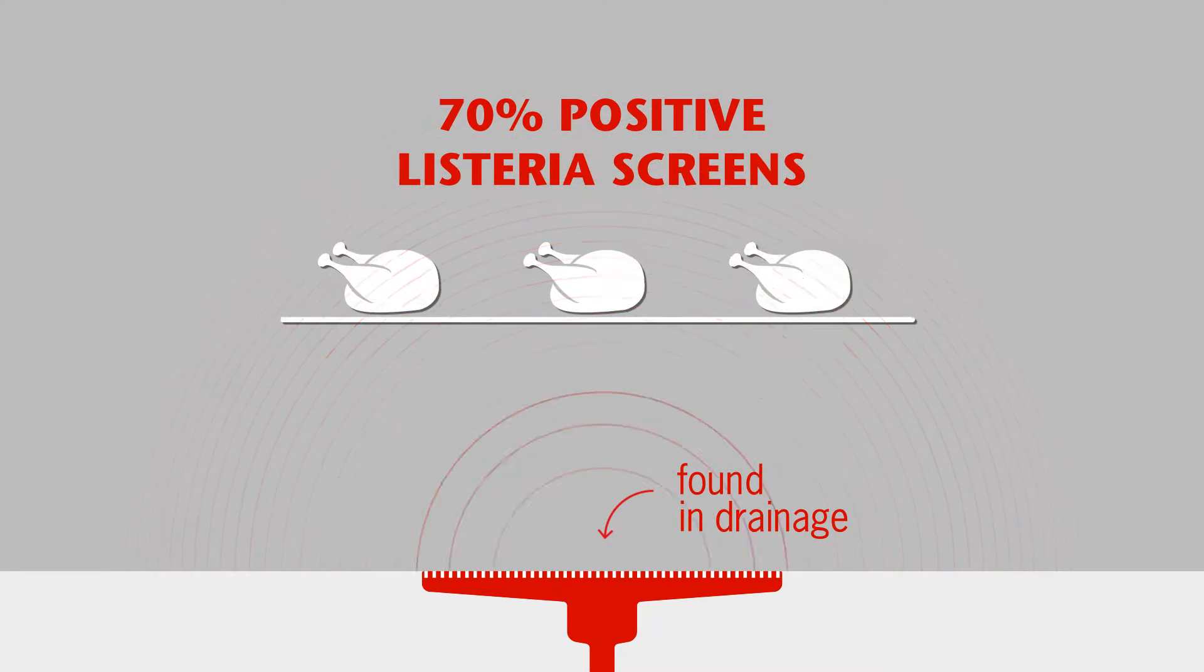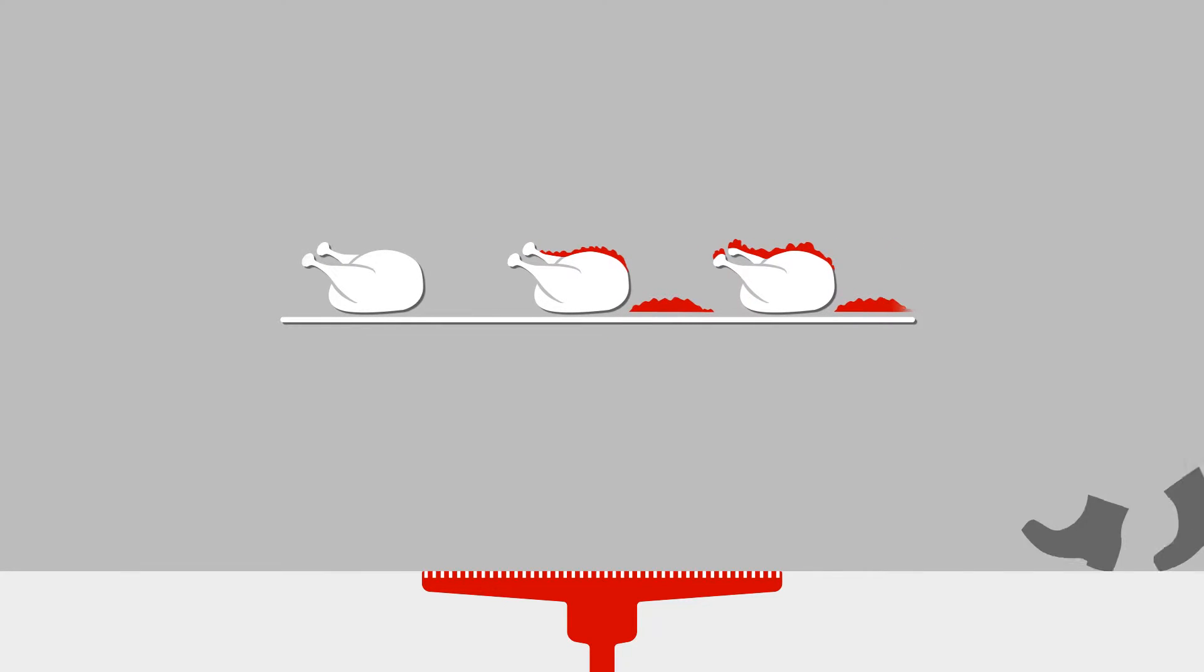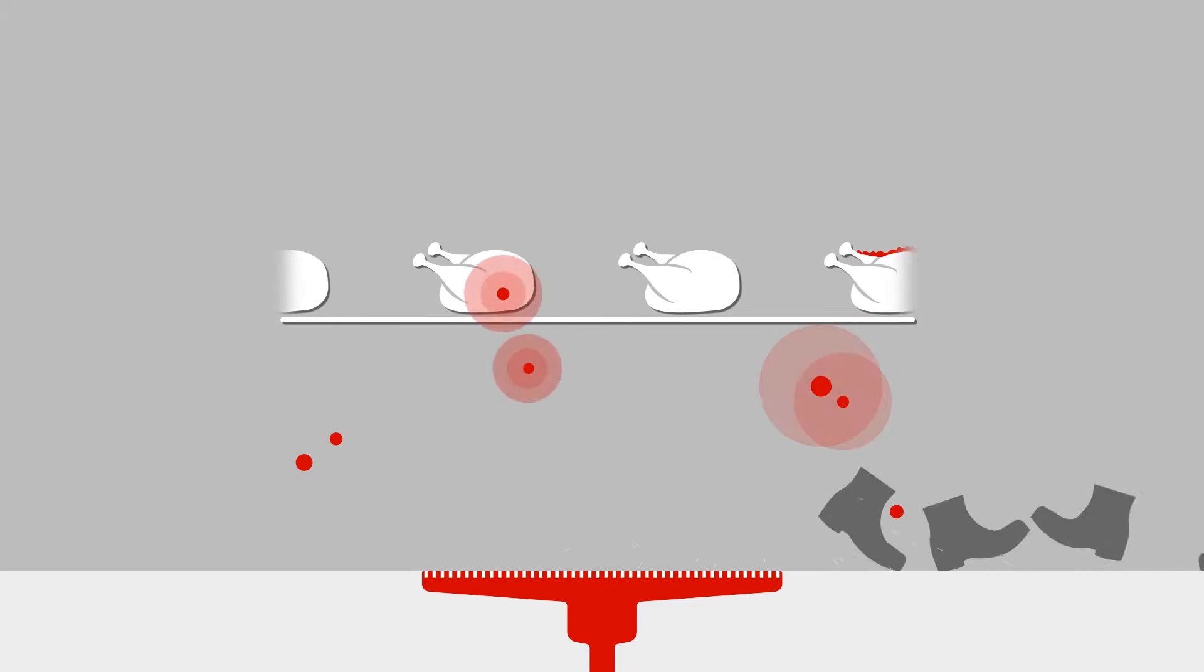It means the drainage may be the point of food contamination. Think about any traffic going over the drainage. Any standing water in the drainage or around it may be a threat to food.